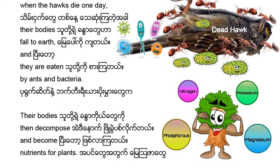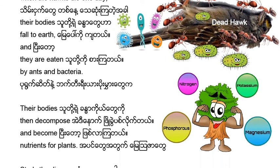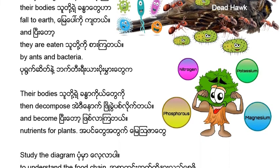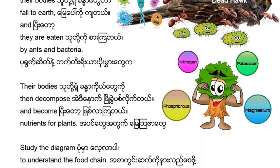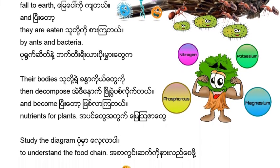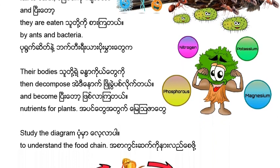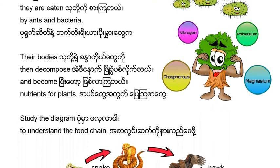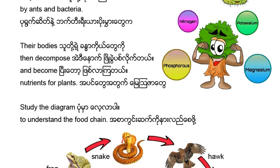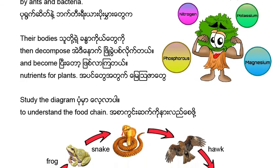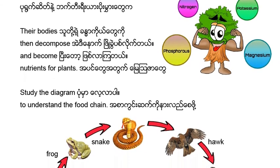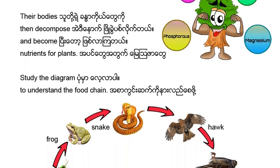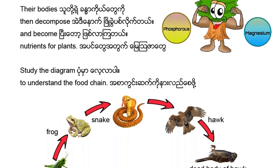They are eaten by ants and bacteria. Their bodies then decompose and become nutrients for plants. Study the diagram to understand the food chain.